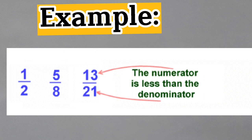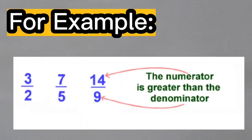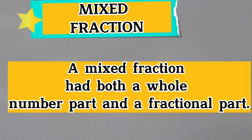Next, improper fraction. An improper fraction is one where the numerator is greater than the denominator. Note that an improper fraction is always greater than one. For example: three over two, seven over five, nine over... the numerator is greater than the denominator.